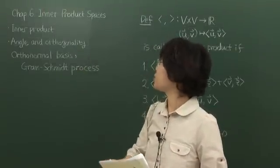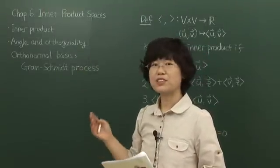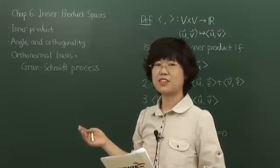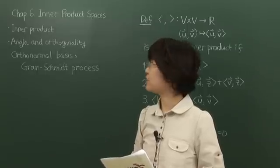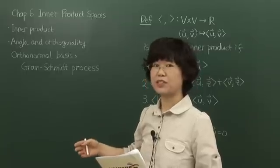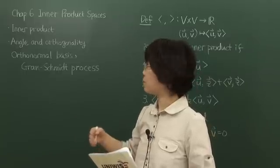Chapter 6 is about inner product spaces. Inner product is a generalization of dot product of Euclidean n-space to general vector spaces we defined in Chapter 5.